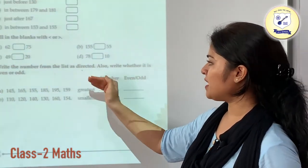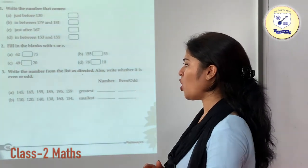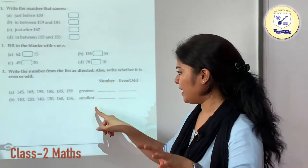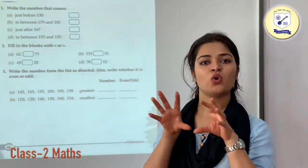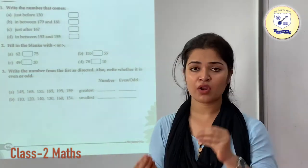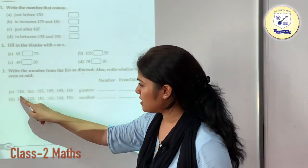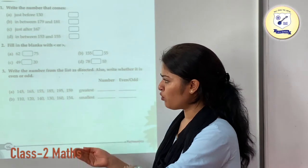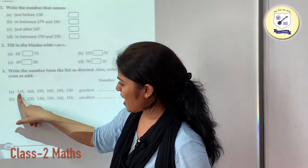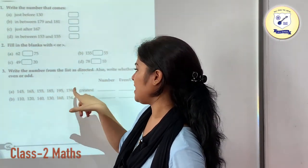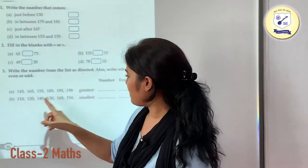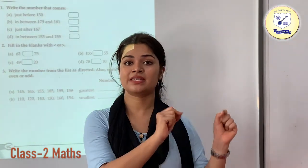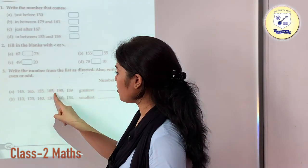Write the number from the list as directed and write whether it is even or odd. First, find out the greatest number and then the smallest number. The hundreds place value is the same for every number, so we move to the tens place: 4, 6, 5, 8, 9, and 5. The greatest number should have the highest tens digit, which is 9. So this is going to be your greatest number — 195.